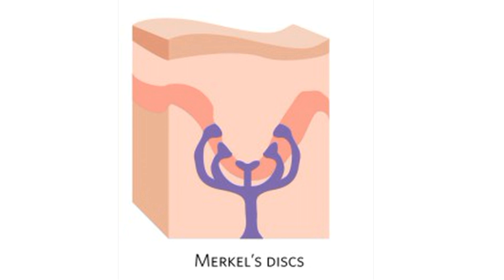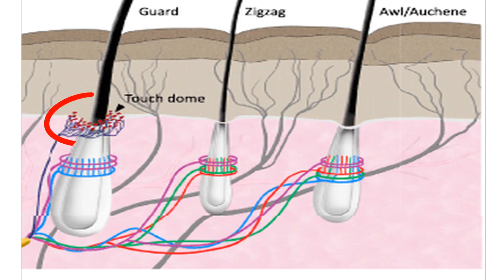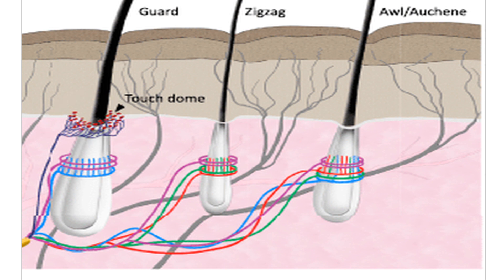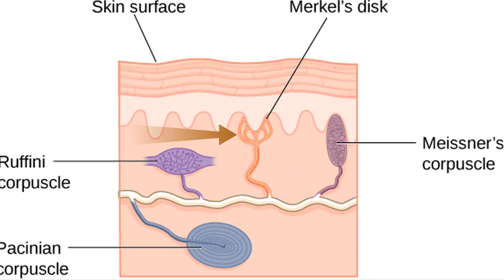Merkel's discs are concentrated in fingertips and hair follicles. In hairy skin, clusters of Merkel's discs are known as tactile domes or touch domes. While Meissner's and Pacinian corpuscles sense vibration, Merkel's discs sense gentle touch, including social interactions, environmental exploration, and tactile discrimination. They are highly abundant on fingertips and provide high tactile acuity for an object's physical features such as texture, shape, and edges. Unlike Meissner's and Pacinian corpuscles, Merkel's discs are slowly adapting, meaning you remain aware of the stimulus as long as it persists.